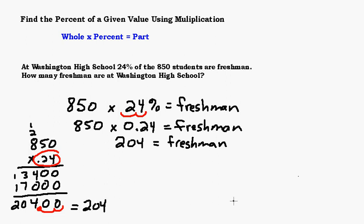So the steps are: if you don't know the part, you're going to take your whole times your percent and that gives you your part. Make sure you move your decimal, and then calculate it either by long multiplication or by using a calculator.